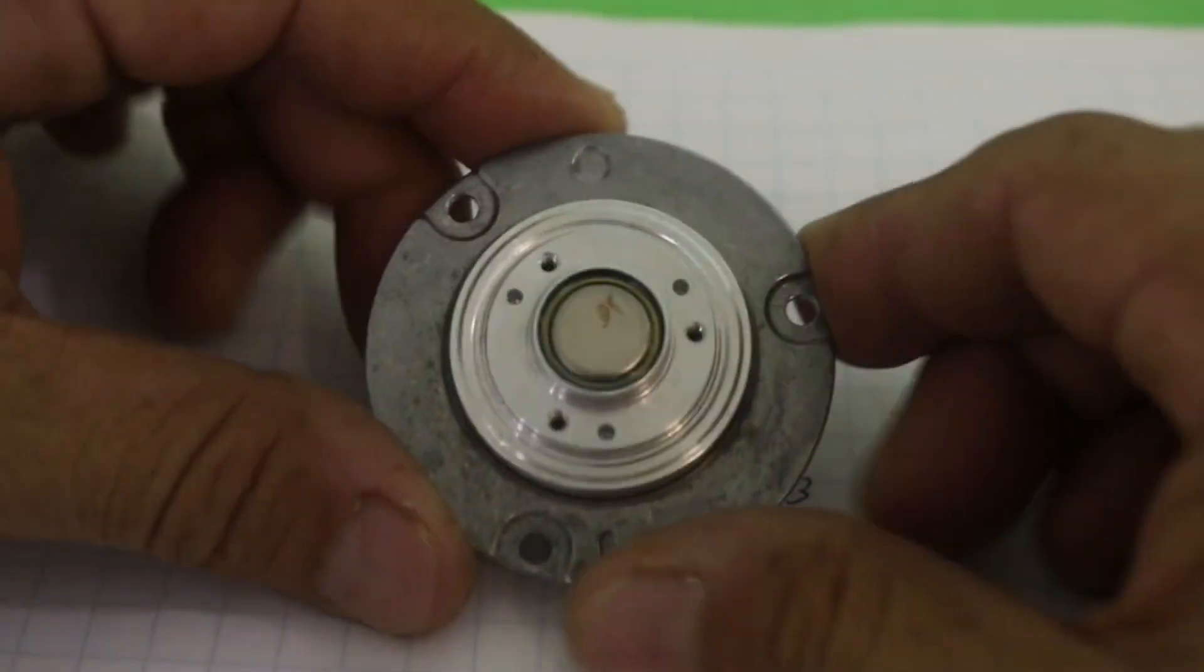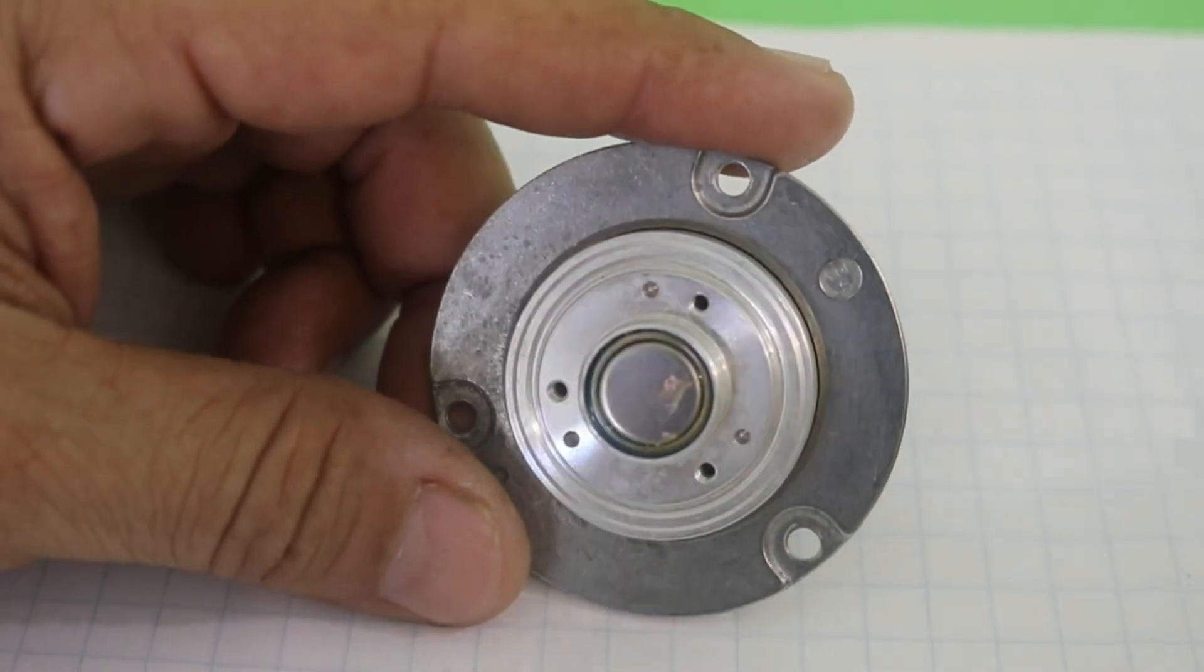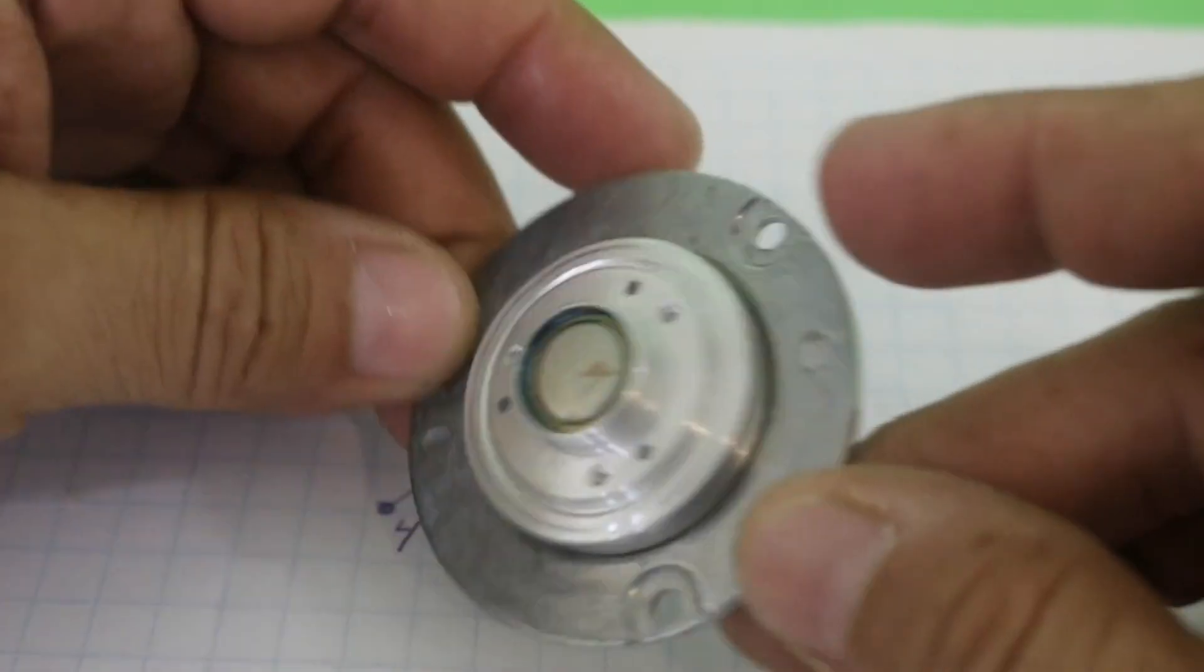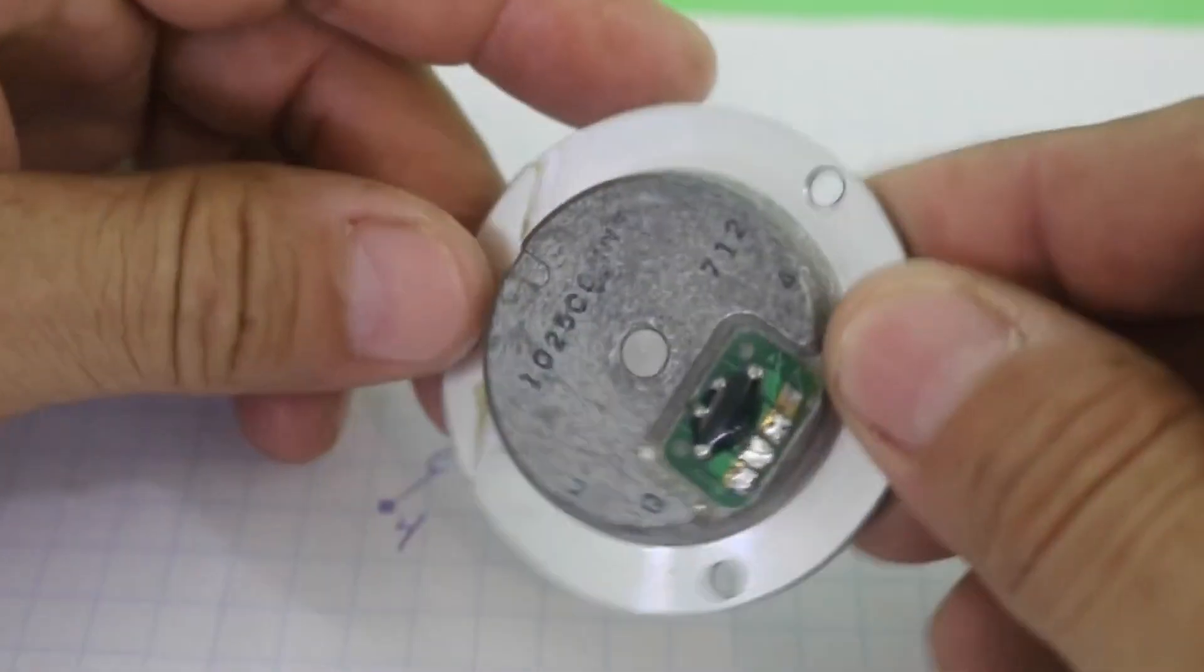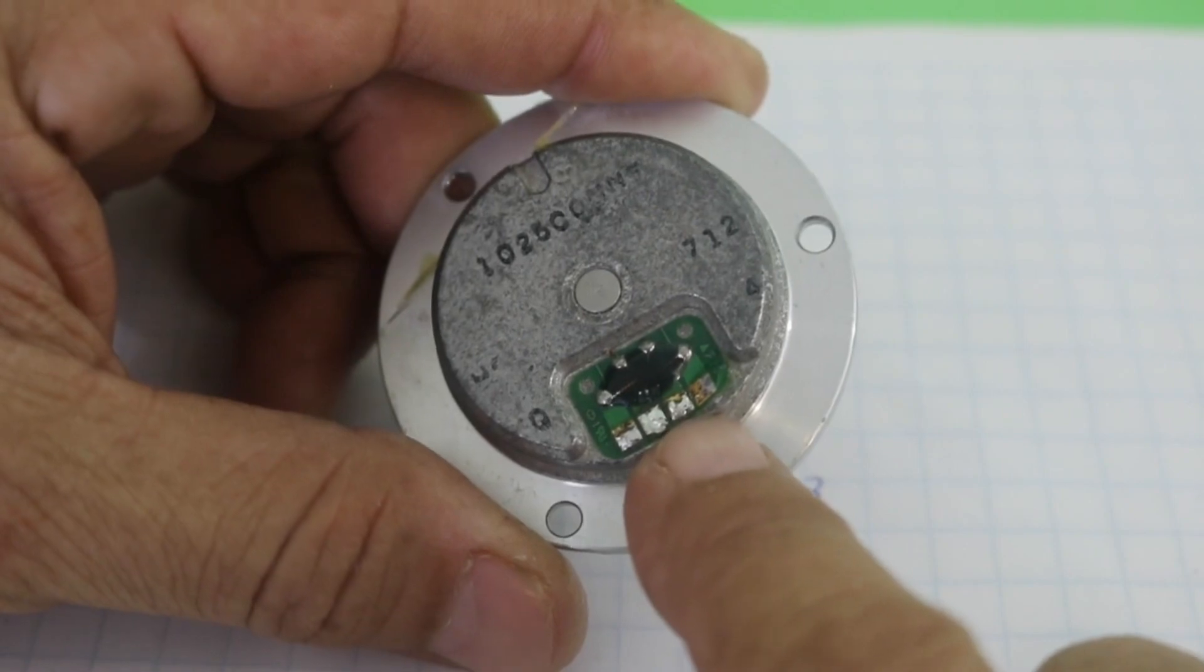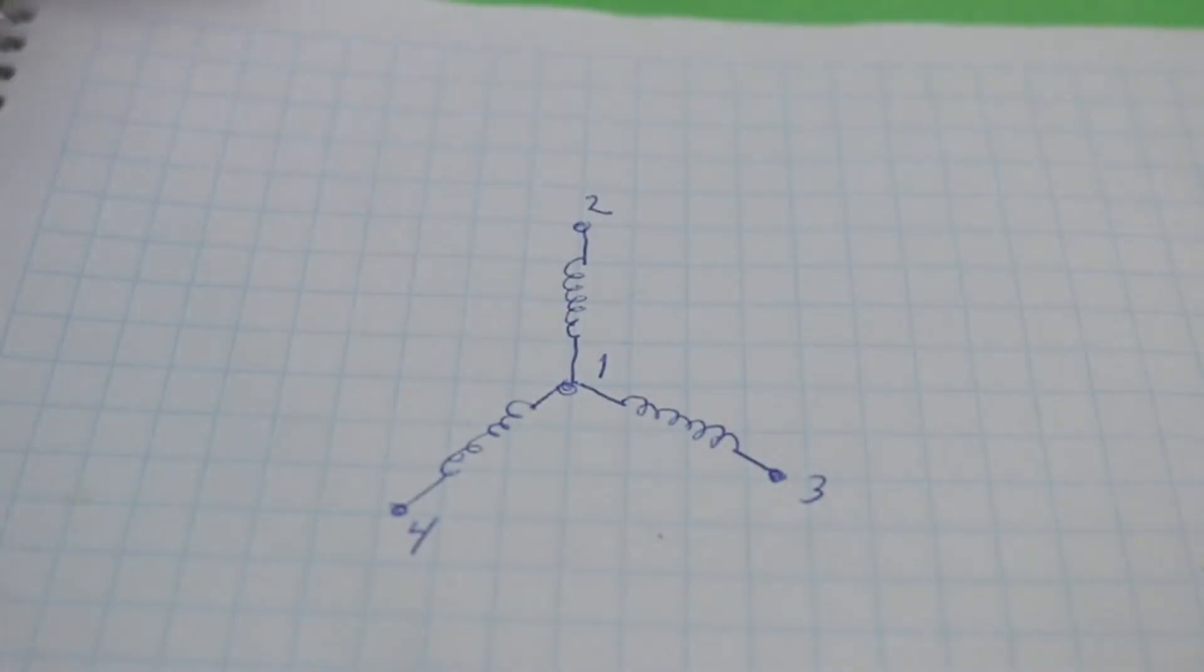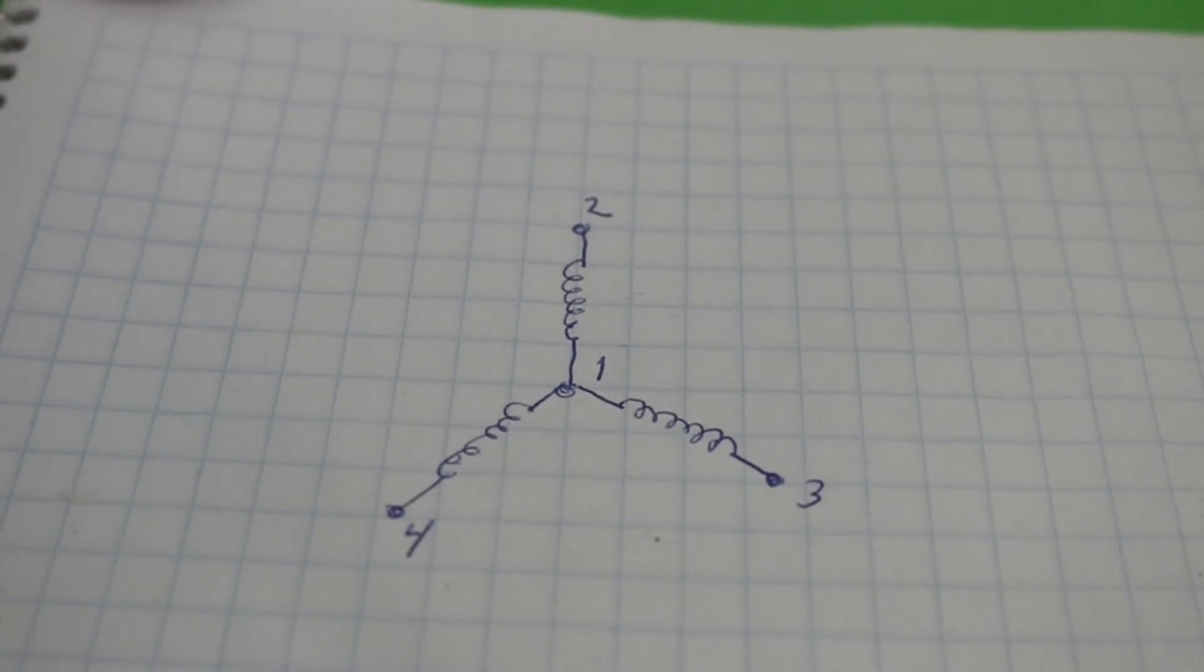Hard drive motors cannot be simply connected to a battery or power supply and make them work. This is because they are brushless motors and normally have four terminals. The four terminals are because inside the motor we have three coils connected in a star configuration.